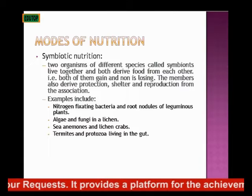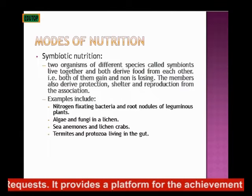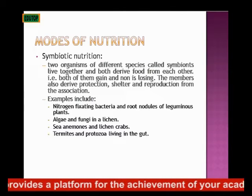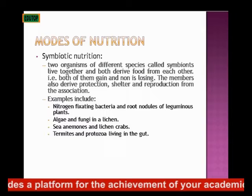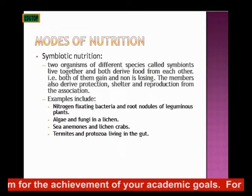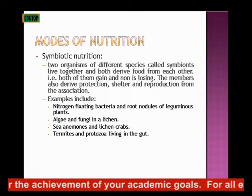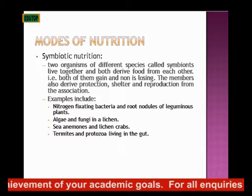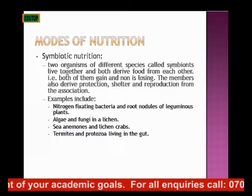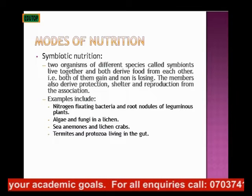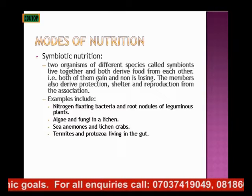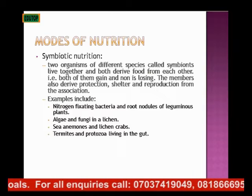Another example is the algae and fungi — what we call lichen — the association of algae and fungi living together. We also have sea animals and crabs, which are examples of symbiotic organisms or symbionts.